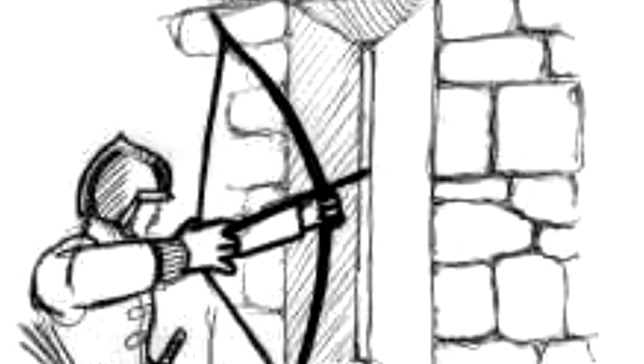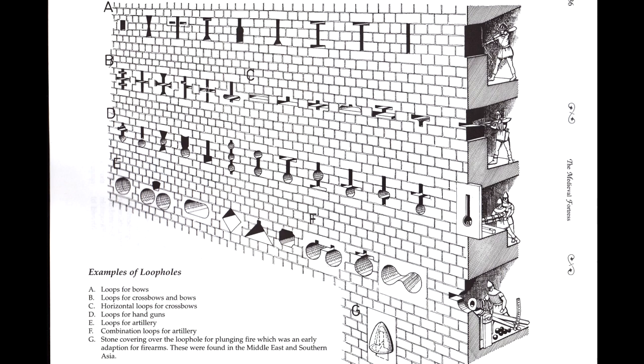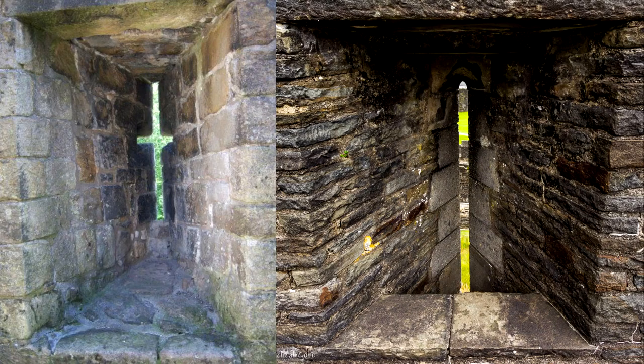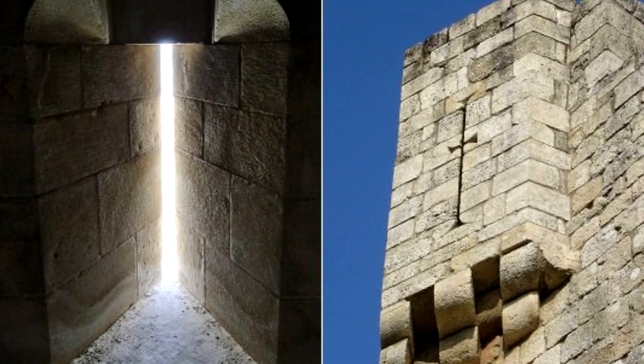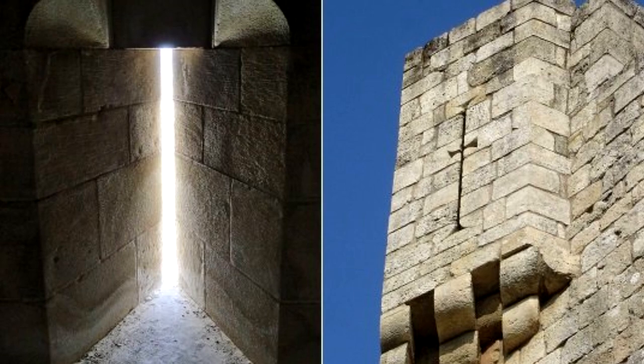Arrow slits allowed defenders to fire their arrows from cover, and there were many different styles as illustrated here. On the inner side of the arrow slit, the walls are usually cut away in a wedge shape. This allowed the archer to have a good amount of flexibility when shooting at different angles, both vertically and horizontally, whilst any attacking force only had a small target which they had to hit to strike the defenders.